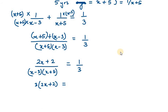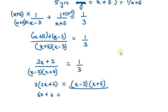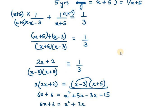And the denominator on the left-hand side goes to the right-hand side, giving us (X minus 3)(X plus 5). Now expand: 3 times (2X plus 2) gives 6X plus 6, equal to the expansion of the right-hand side: X squared plus 2X minus 15.